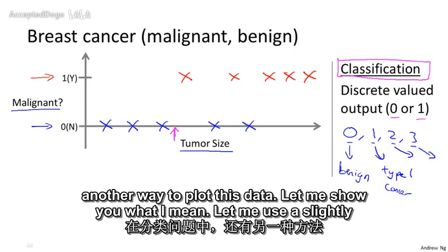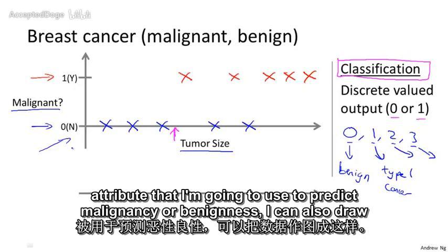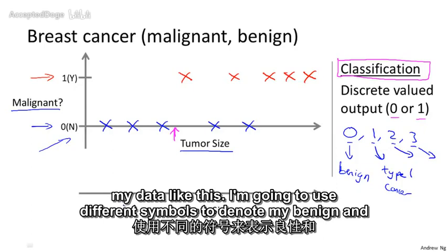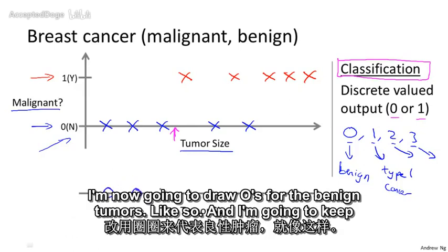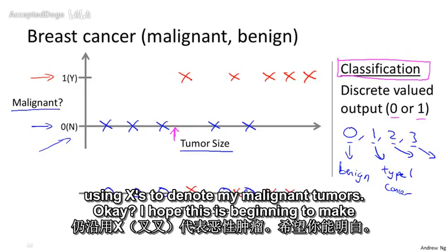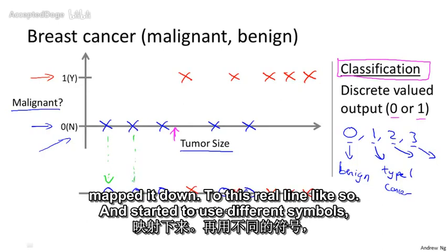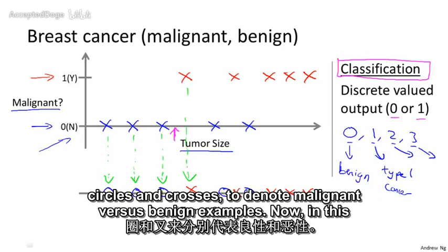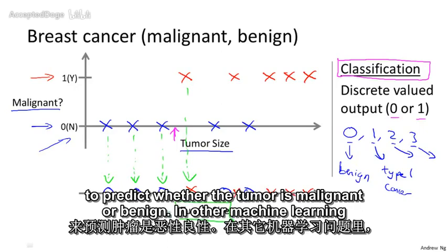In classification problems, there is another way to plot this data. I'm going to use different symbols to denote benign and malignant examples — O's for benign tumors and X's for malignant tumors. All I did was map the dataset down to a real line and use different symbols — circles and crosses — to denote malignant versus benign examples. In this example, we used only one feature, namely the tumor size, in order to predict whether a tumor is malignant or benign.